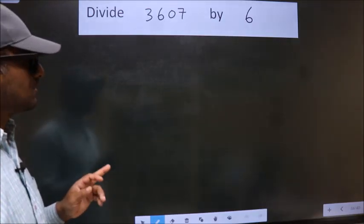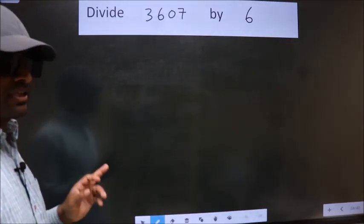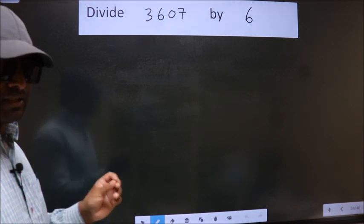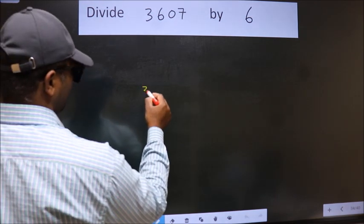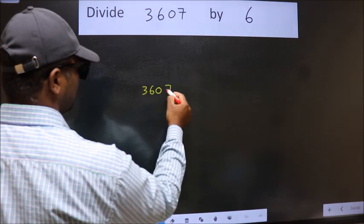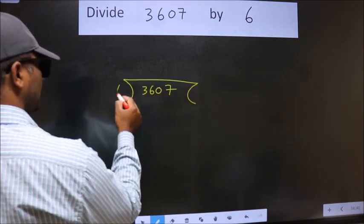Divide 3607 by 6. To do this division we should frame it in this way. 3607 here, 6 here.